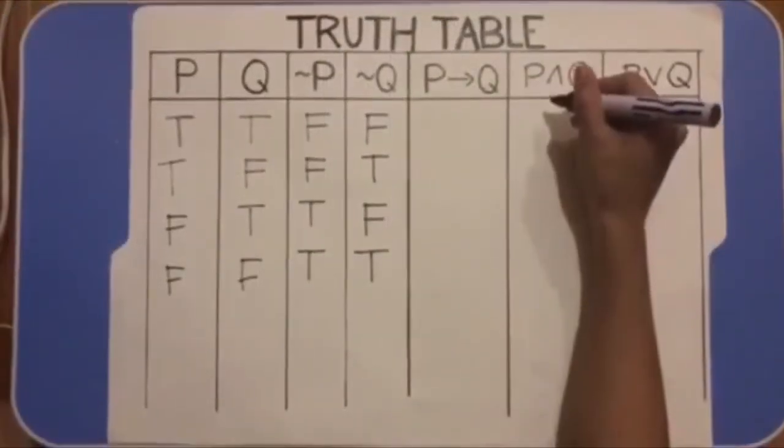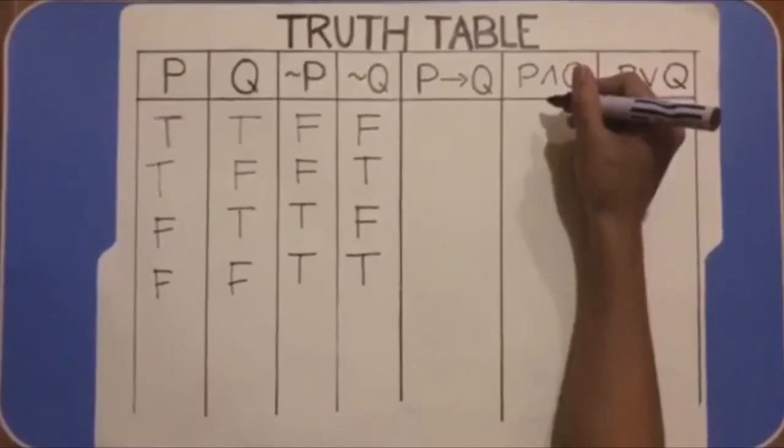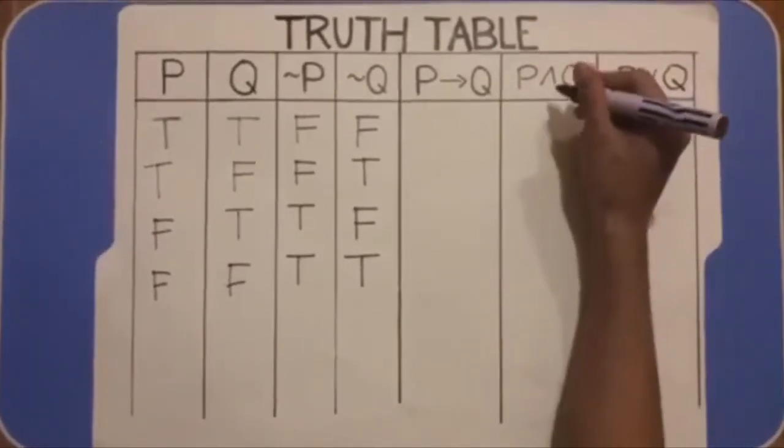In P and Q, it should be true when P and Q are true and false otherwise.